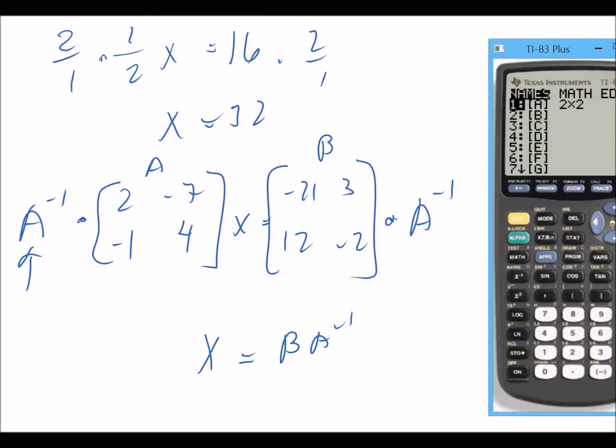First, we're going to enter those matrices, second matrix edit. We want a 2 by 2, but I've got to change what's inside. So we want 2, negative 7, negative 1, and 4.